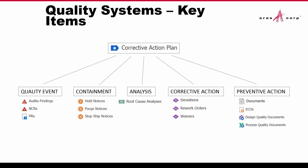The corrective action plan is the top-level item and it connects to quality events. You might have audit findings, non-conformance reports, or problem reports that you're going to capture — things like a problem with a product on the shop floor. For containment, you manage the issue: you may put something on hold, purge your stock, or issue a stop ship.